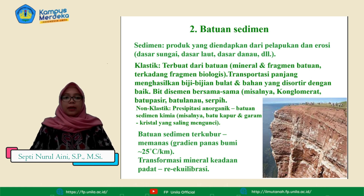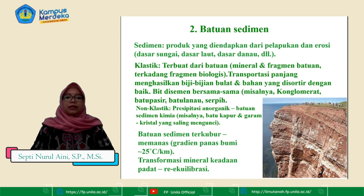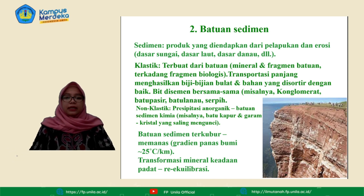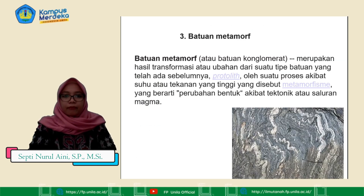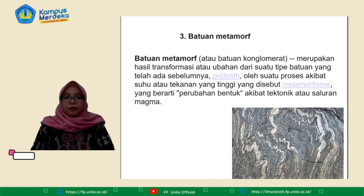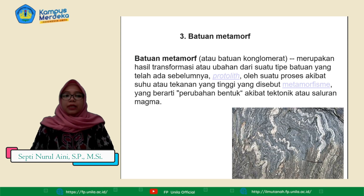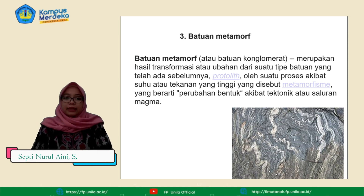Misalnya batuan kapur dan garam atau kristal yang mengunci. Batuan sedimen ini terkubur, kemudian akan memanas apabila gradien panas bumi berkisar 25 derajat Celsius per kilometer. Transformasi mineral ini terjadi dalam keadaan padat atau re-ekuilibrasi. Yang ketiga yaitu batuan metamorf. Batuan metamorf merupakan hasil transformasi dari suatu tipe batuan yang telah ada sebelumnya atau protolit, oleh suatu proses akibat suhu dan tekanan yang tinggi yang disebut metamorfisme, yang berarti perubahan bentuk akibat tektonik atau saluran magma.